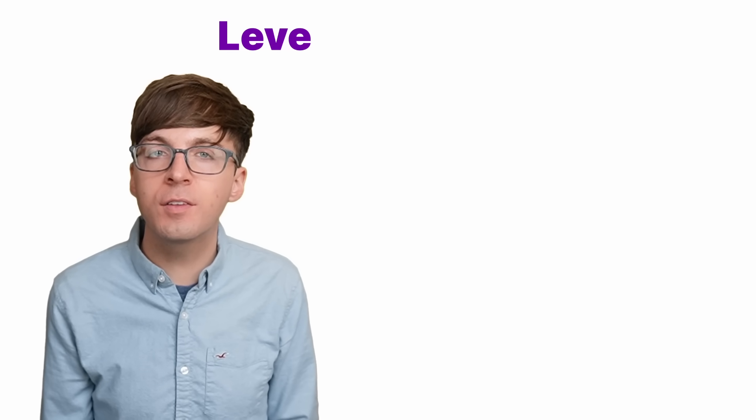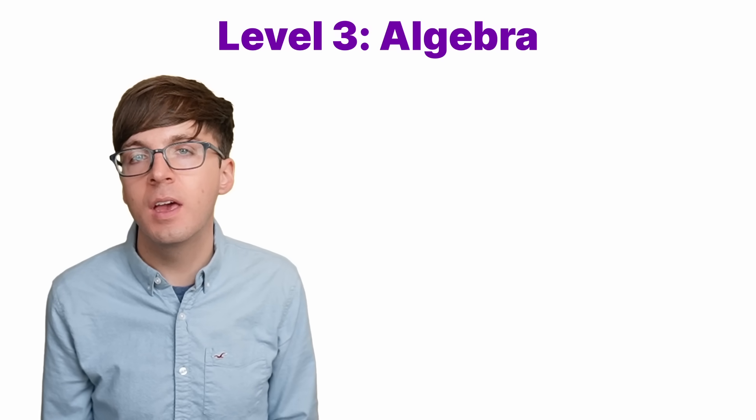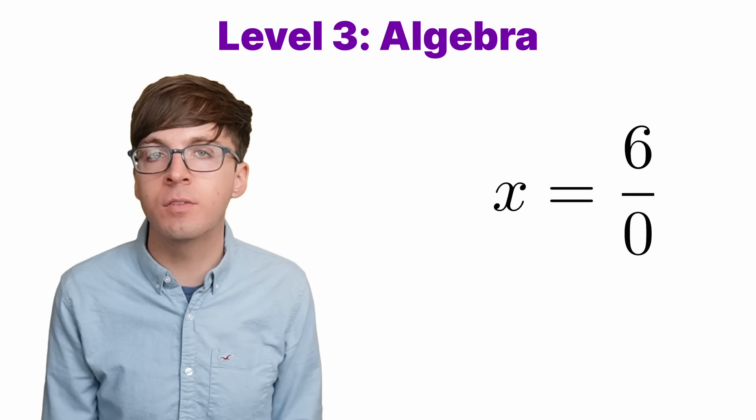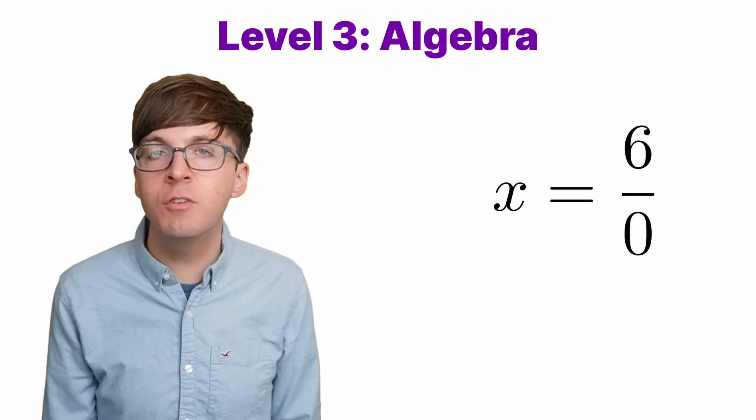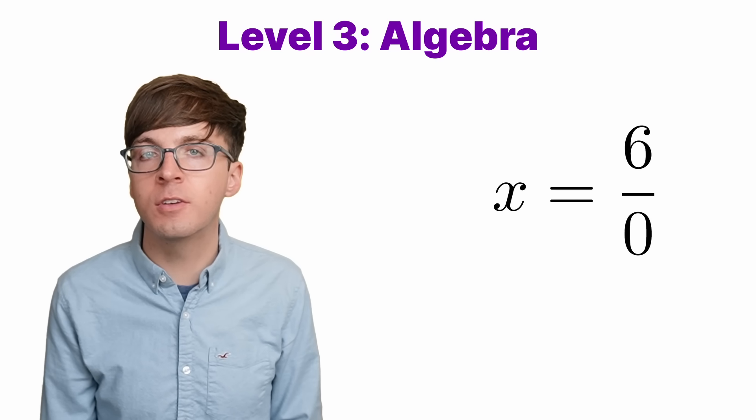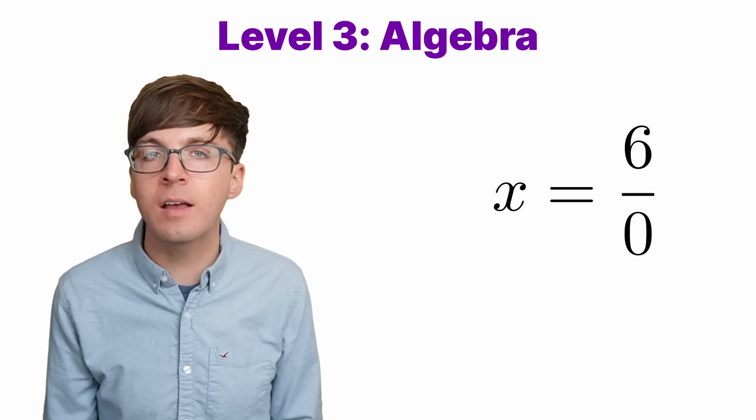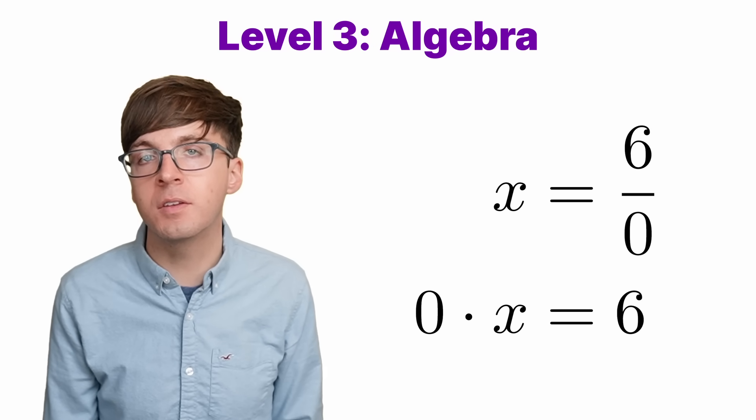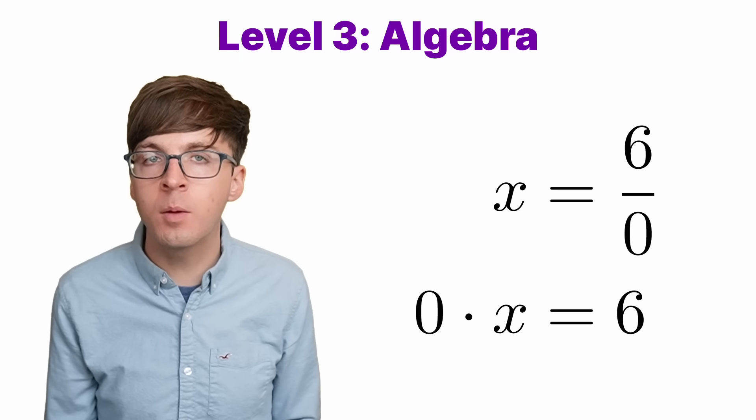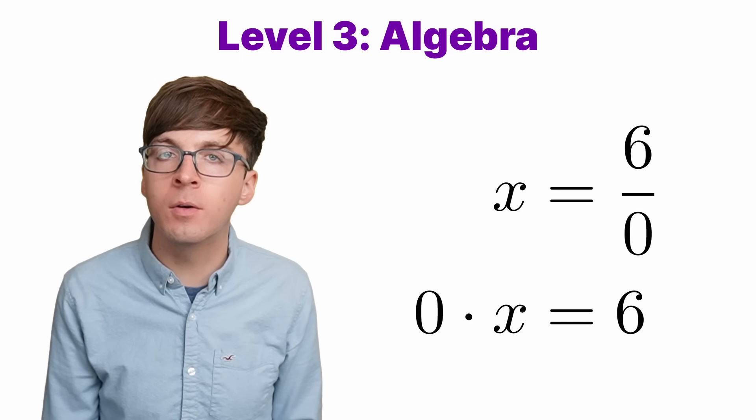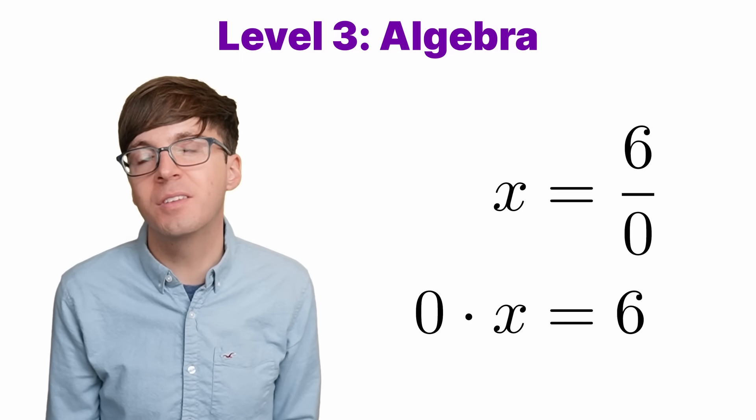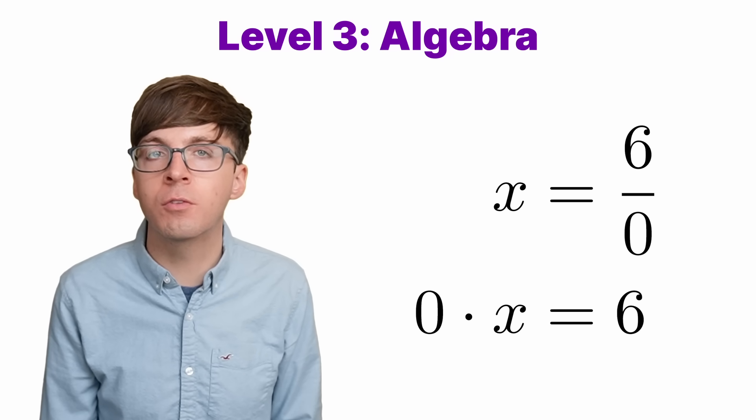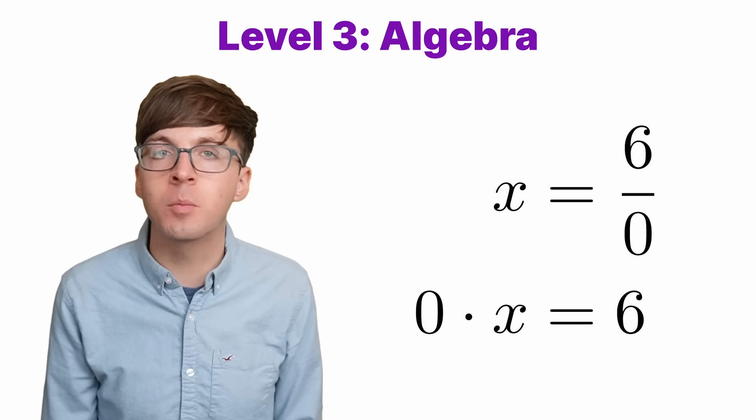For level three, let's look at an algebraic approach. Say we want to find six divided by zero. We can write x equals six divided by zero. Division is the inverse of multiplication. So this should be the same thing as asking for what value of x satisfies the equation zero times x equals six. What number, when we multiply it by zero, gives us six? Well, there isn't one. Any number times zero is just zero. So there is no possible solution for x. Well, no real number anyway.